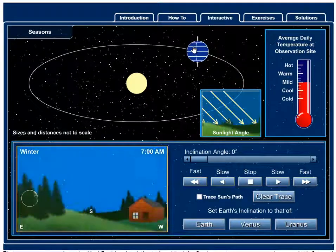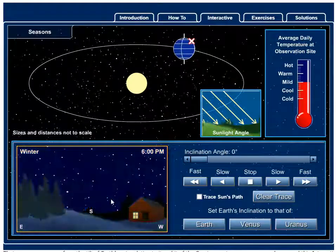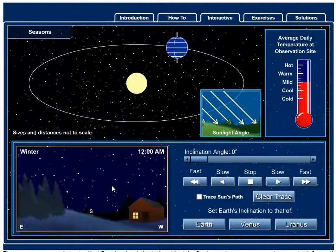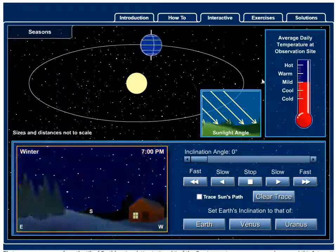Notice the X marks where the person is on the earth and what they would see bottom left in terms of the seasons and how high the Sun would be in the sky, what the sunlight angle is like striking the earth at that point and then we have the temperatures here.